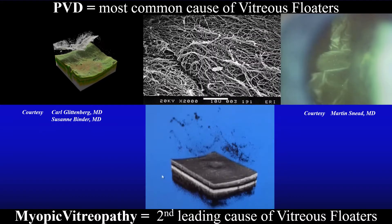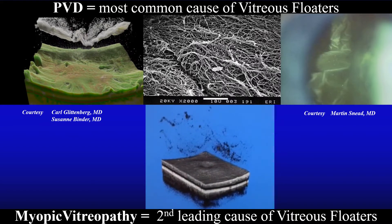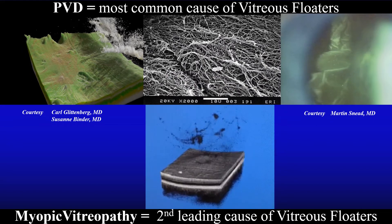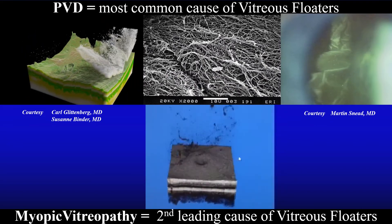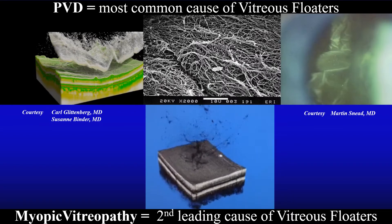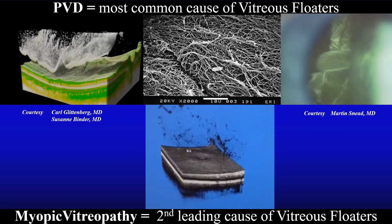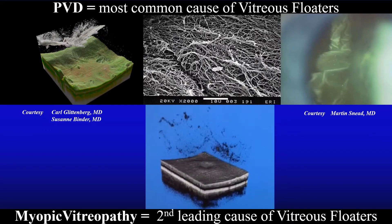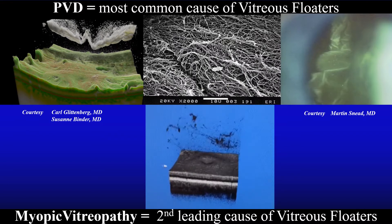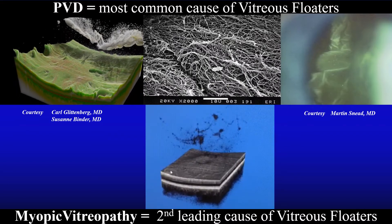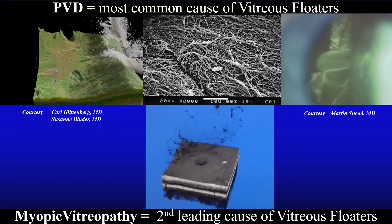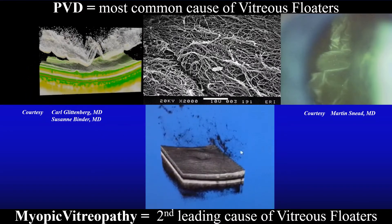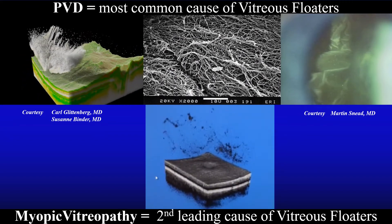Posterior vitreous detachment is the most common cause of vitreous floaters, due to the dense matrix of collagen fibrils in the posterior vitreous cortex as well as folding of the posterior vitreous cortex after it separates away from the retina. This is the mechanism in older individuals; the mean age in our experience has been 61 years. However, younger individuals also suffer from vitreous floaters, and in that case the etiology is myopic vitreopathy, as demonstrated in the middle panel below.